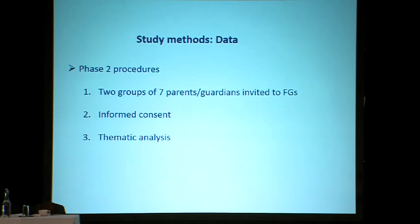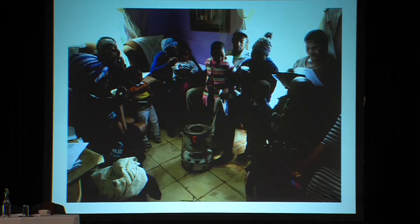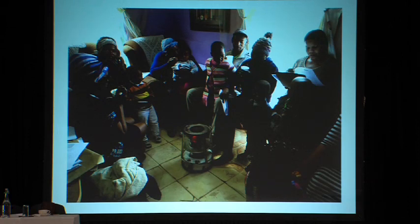In phase two, we invited 14 parents — two groups of seven — who had participated in phase one, to participate in two focus groups and tell us what they thought. They were again given informed consent. Here you can see us sitting in the living room of this typical Kailisa home on a cold winter's morning. There's a paraffin heater, reading the consent forms and enjoying warm refreshments homemade by our host.